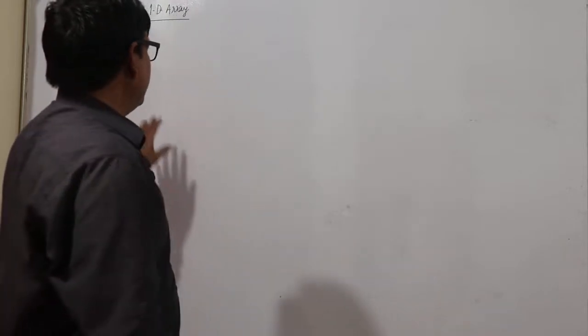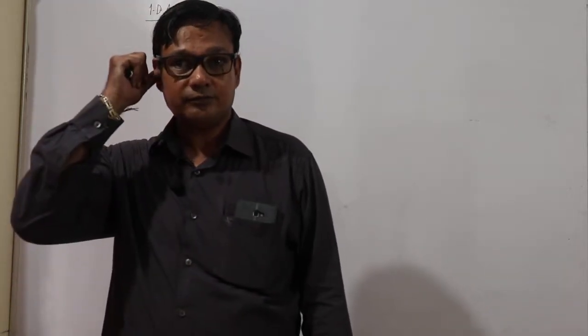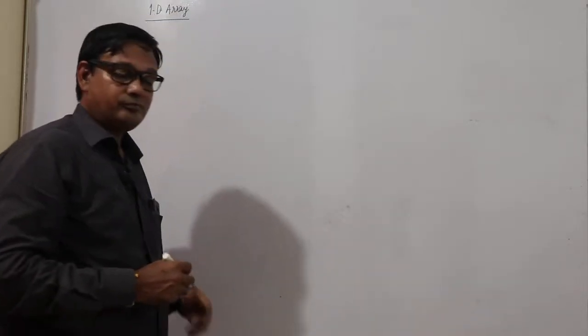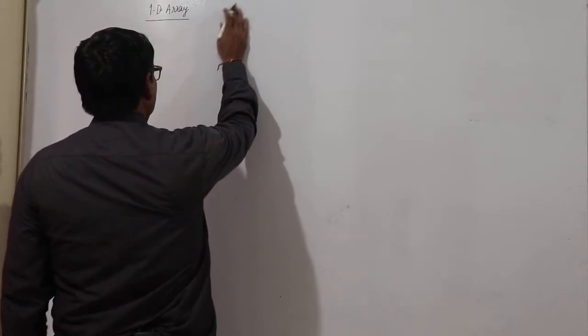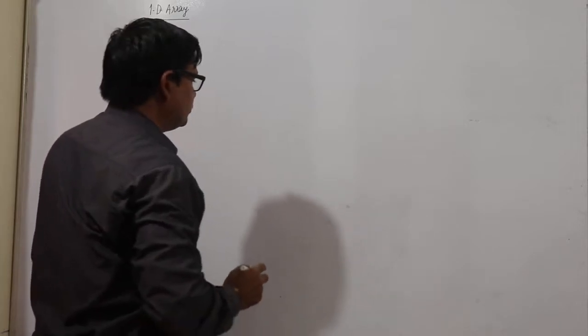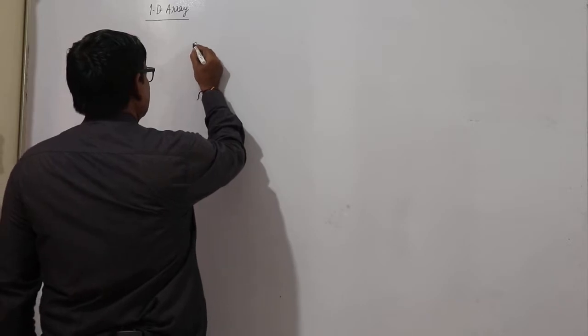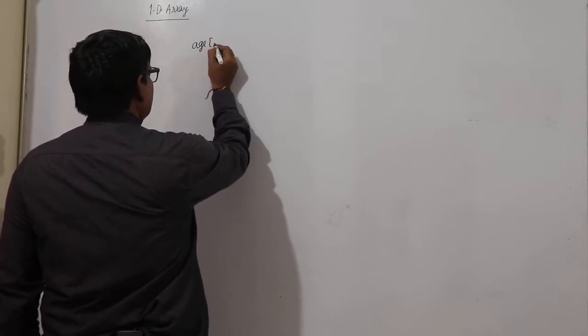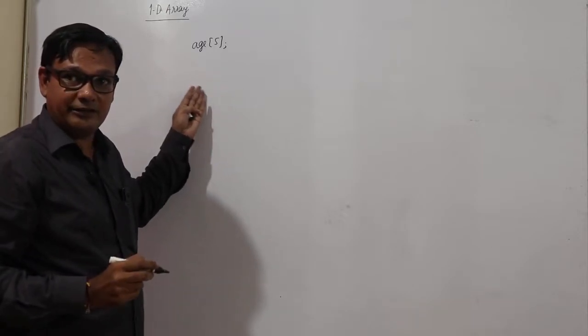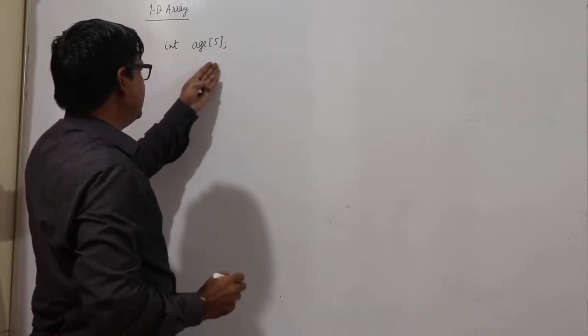These type of problems can be avoided using one dimensional array. For example, if I want to store the age of 5 students, I am not using 50 here. I will use 5 students. Age of 5 students. It is a data type. I am taking this age as int data type. Int age 5.